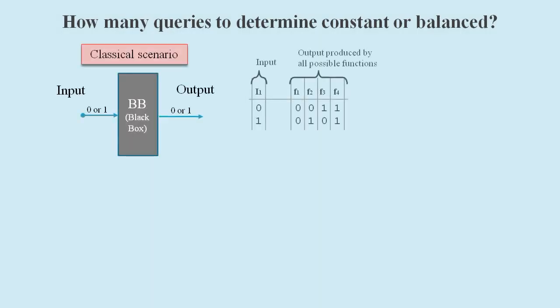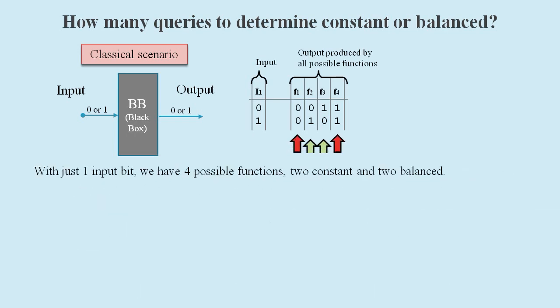With just one input bit we have four possible functions, two constant and two balanced. One function simply sets the output bit to zero. Another function just takes the input and outputs the same value. Then there's the NOT gate which flips the input bit. And the last function simply sets the output bit to one.